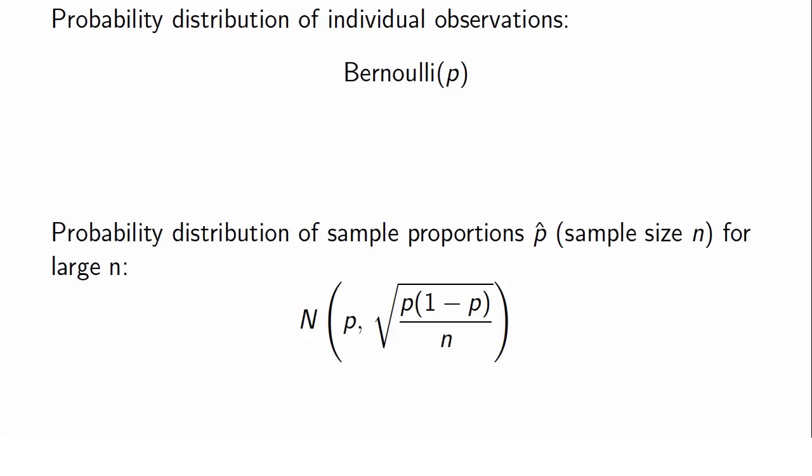Even though in practice we only get one sample, so we only ever observe one value of p-hat, we know that the value of p-hat would vary from sample to sample. And for large n, we know that its distribution is approximately normal. This normal distribution has mean p and standard deviation equal to the square root of p times one minus p over n. And this is the sampling distribution of a sample proportion — the sampling distribution of p-hat.